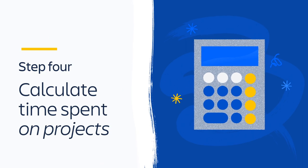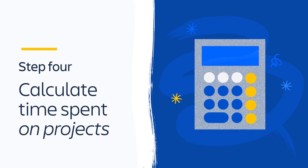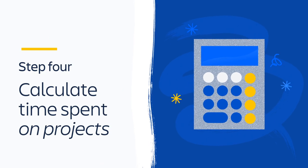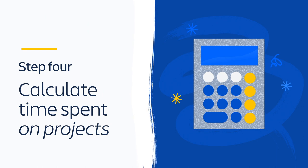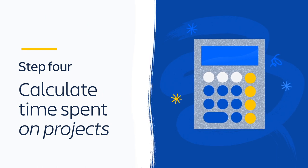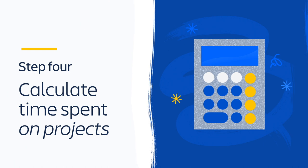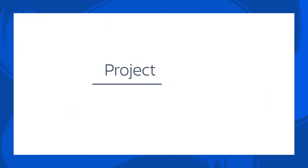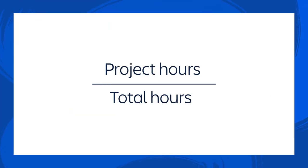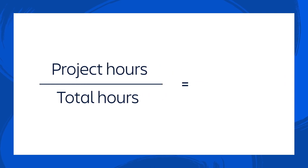Step 4. Calculate the percentage of time spent on projects. If the idea of doing math is scary, no worries. Templates on our capacity planning page make this step easier. But in short, you'll divide hours spent on work projects by the total number of hours from the last step.